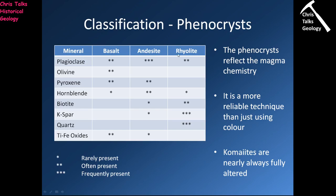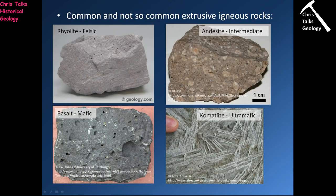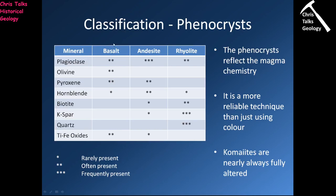Looking at rhyolite, andesite, and basalt — komatiite is not included because we don't have any fresh komatiites — we can see which types of phenocrysts we would expect using a star rating: one star is rare, two is often present, three is frequently present. For a basalt, we might expect plagioclase, olivine, pyroxene, maybe hornblende, and some titanium iron oxides. Olivine is the key diagnostic: it will only appear in basalts, not in andesites or rhyolites. So if we find a volcanic rock containing olivine phenocrysts, it's probably a basalt.